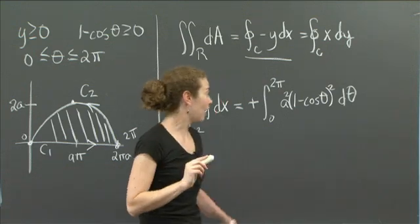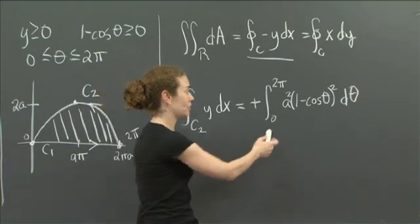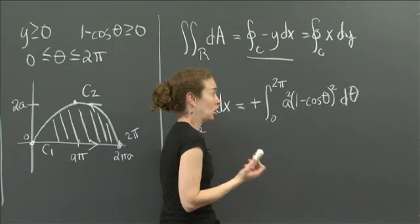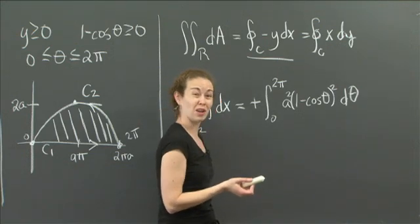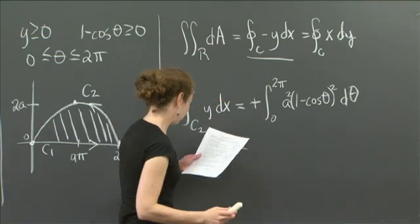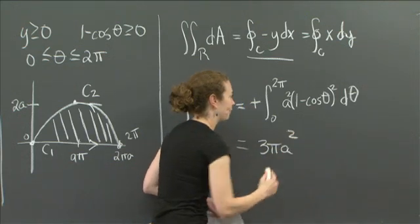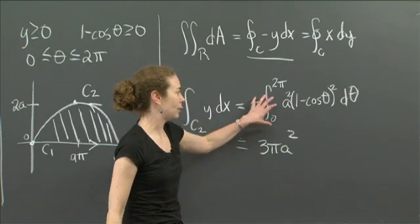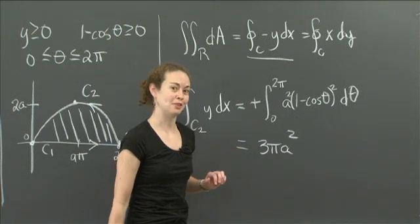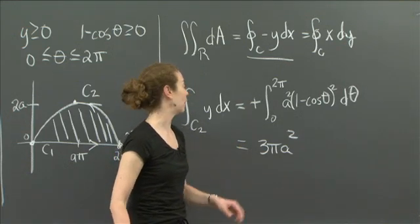I won't write out all the steps, but you can pull out a², leaving (1 - cos θ)². Square all the terms, and you have cos²θ to deal with. Ultimately, when you get your answer, you get 3πa². There's a little cancellation, and it's not too hard to solve since it's a single variable. You should get 3πa².